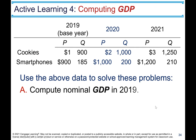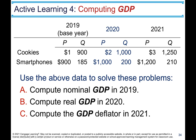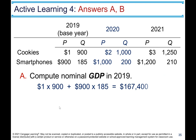Active Learning 4: Computing GDP. In this hypothetical economy producing cookies and smartphones, we look at three years: 2019, 2020, and 2021. Number A: Compute nominal GDP in 2019 — that is, valuing output using current prices. For 2019: 900 × $1 + 185 × $900 = $167,400.